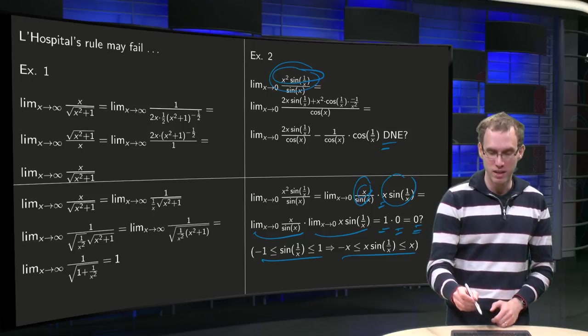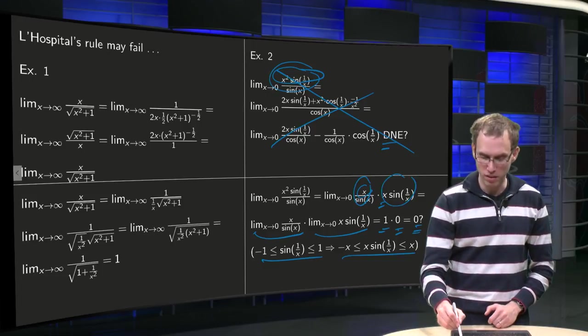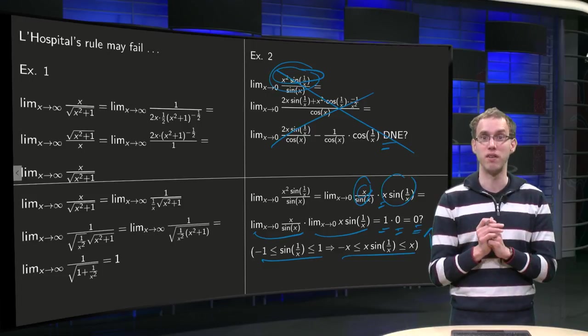That means that in this case you cannot apply L'Hôpital's rule, and that is why this reasoning here is wrong. So does not exist is wrong, and the reasoning over here is correct, so this limit is in fact 0.